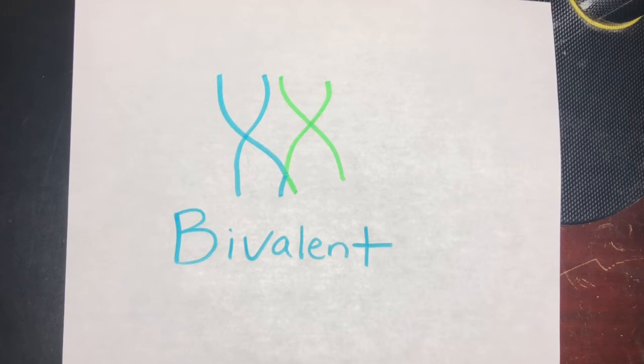A bivalent is one pair of chromosomes and a tetrad, with a tetrad being the association of a pair of homologous chromosomes physically held together by at least one DNA crossover.